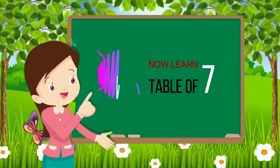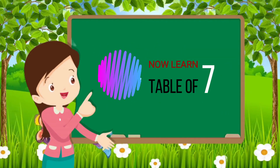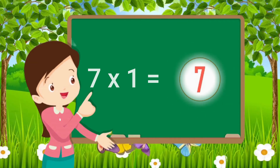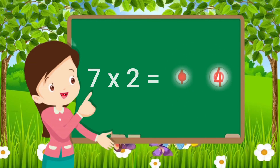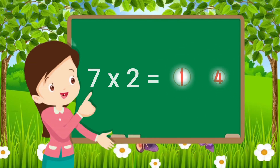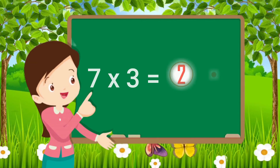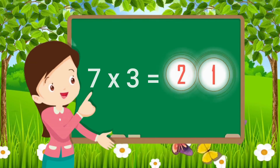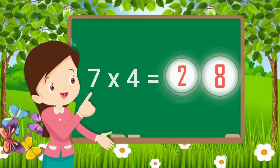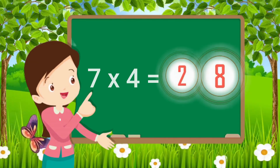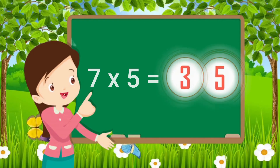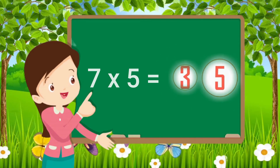Now learn table of seven. Seven ones are seven. Seven twos are fourteen. Seven threes are twenty-one. Seven fours are twenty-eight. Seven fives are thirty-five.